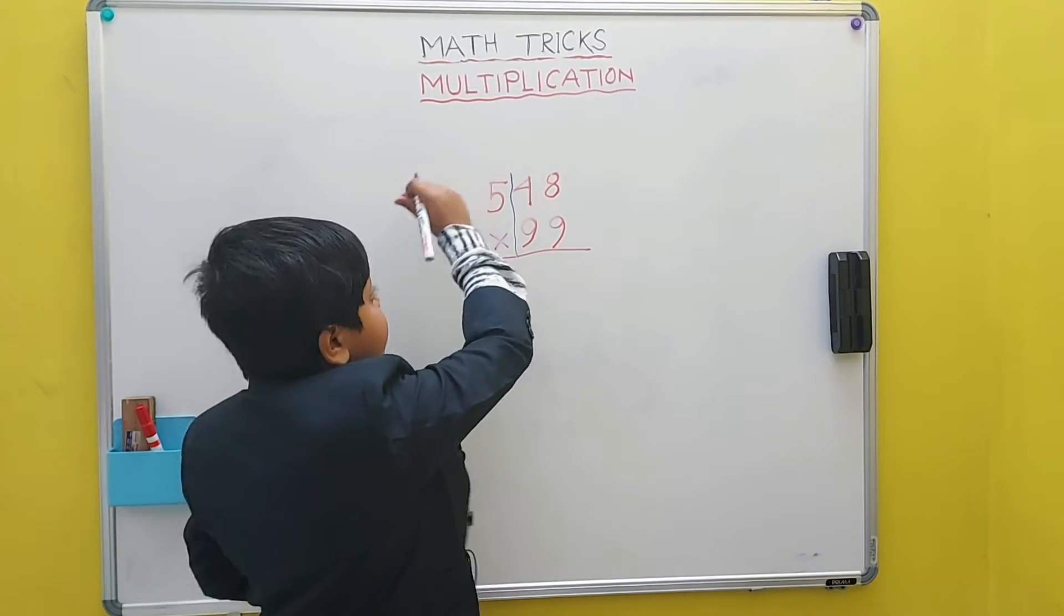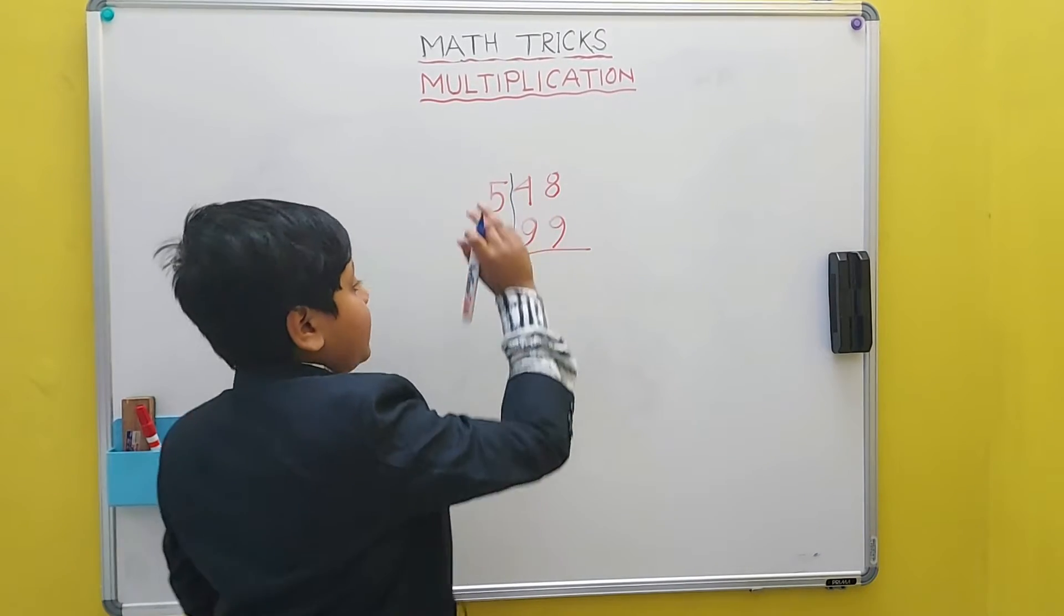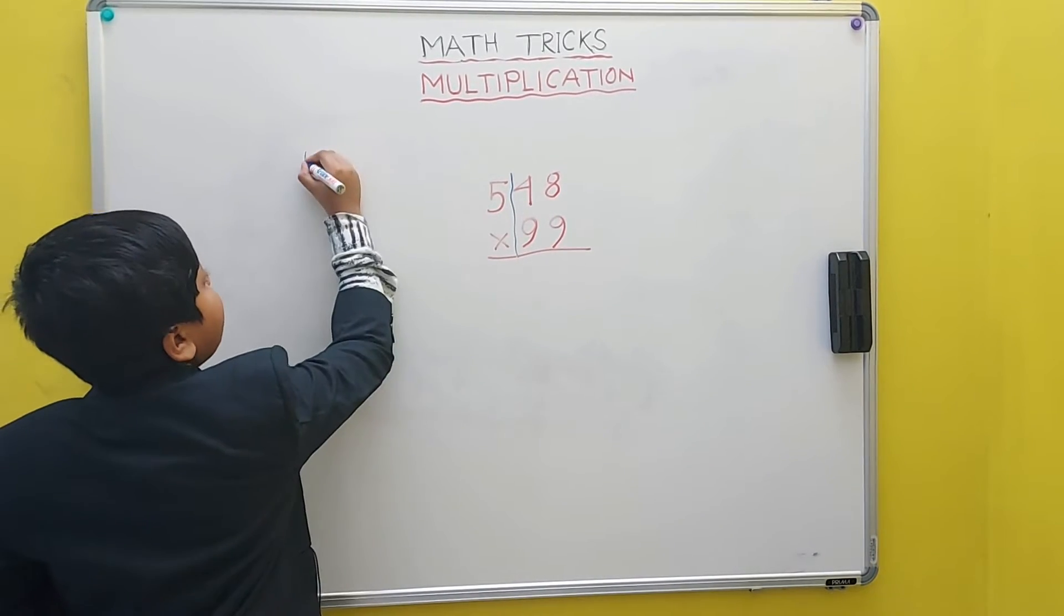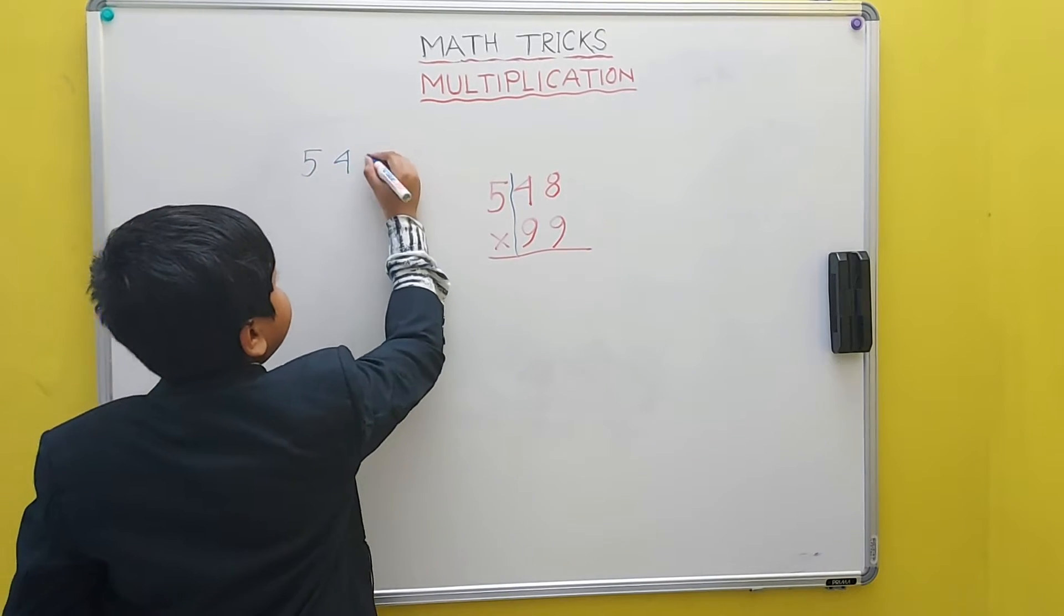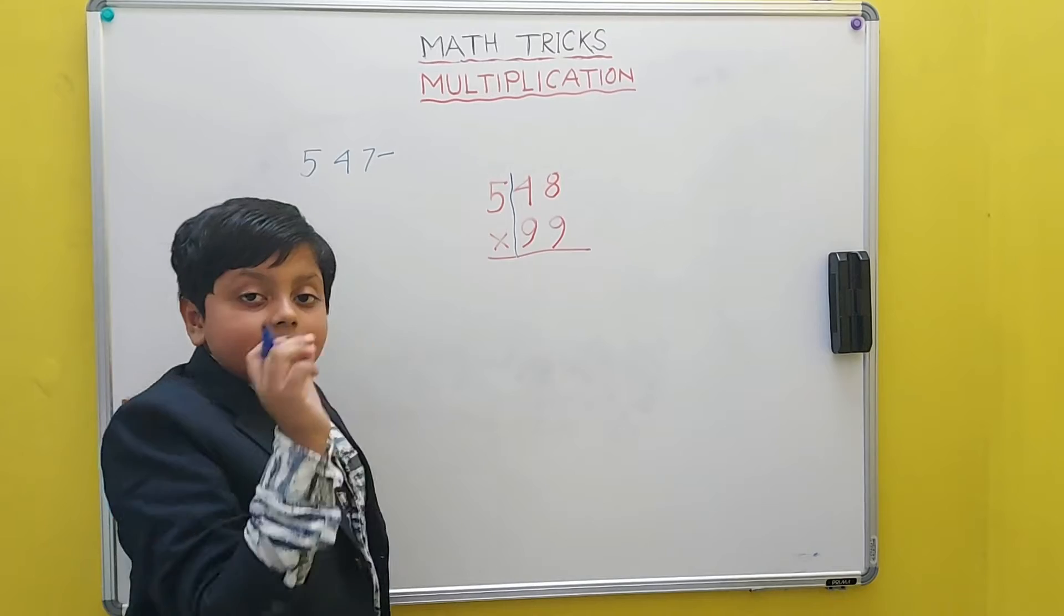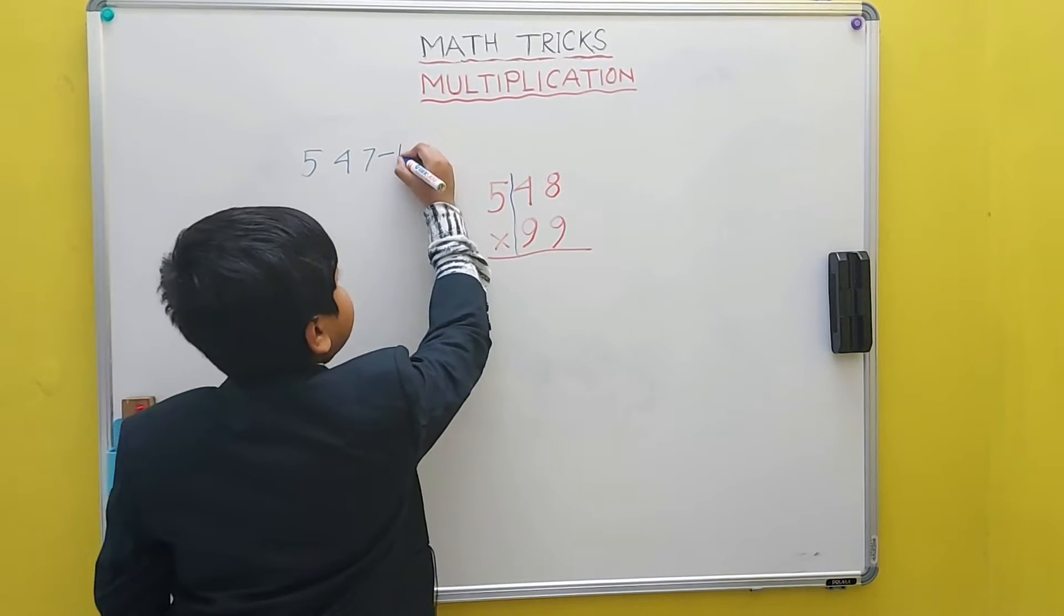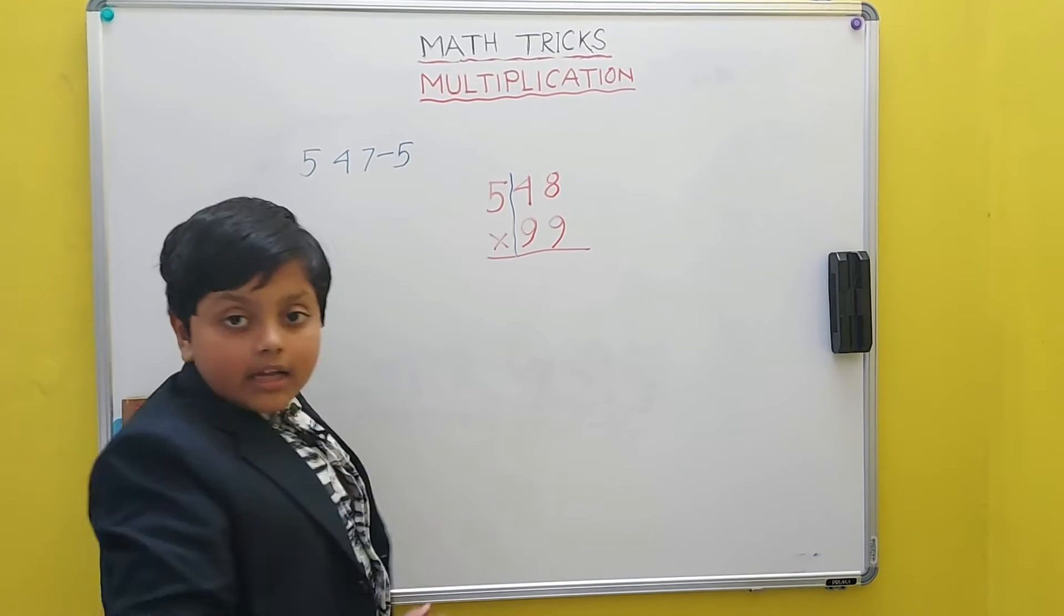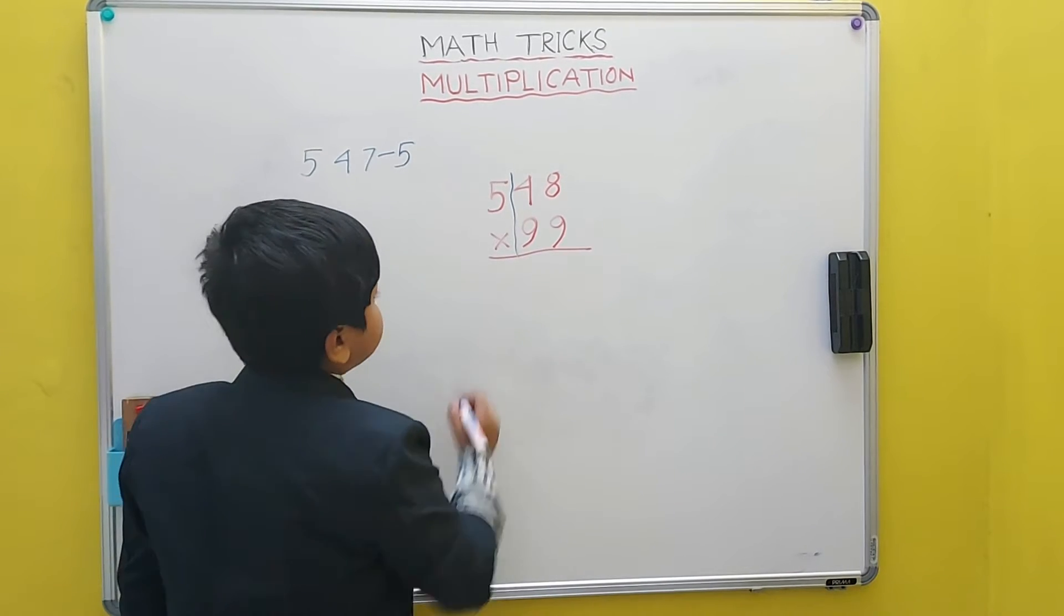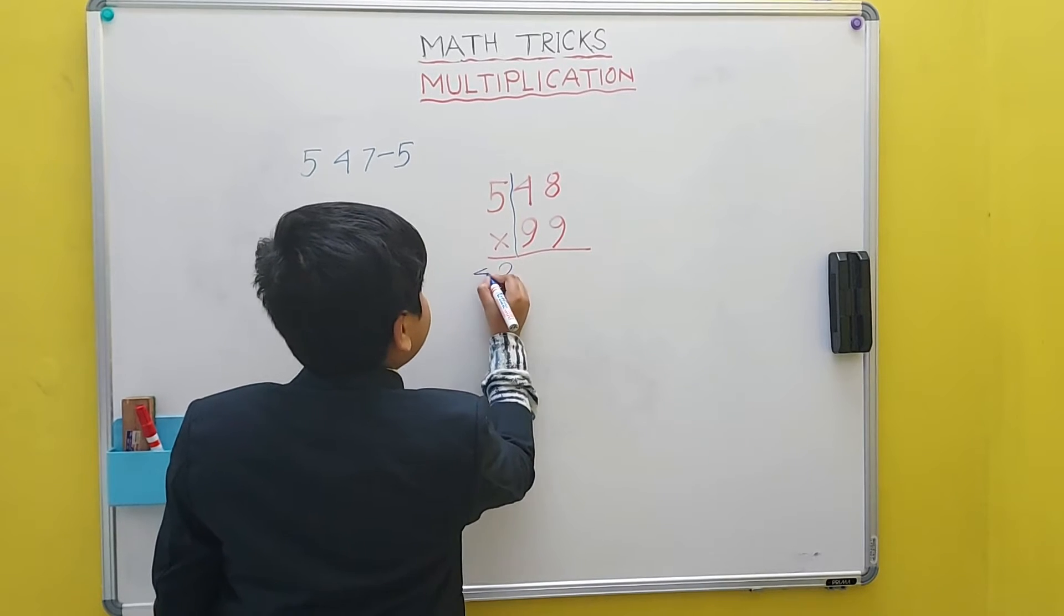Now, we have to take the predecessor of this whole number which is 547. We have to subtract the extra number that is left over from the separation which is 5. And the answer from that is 542.